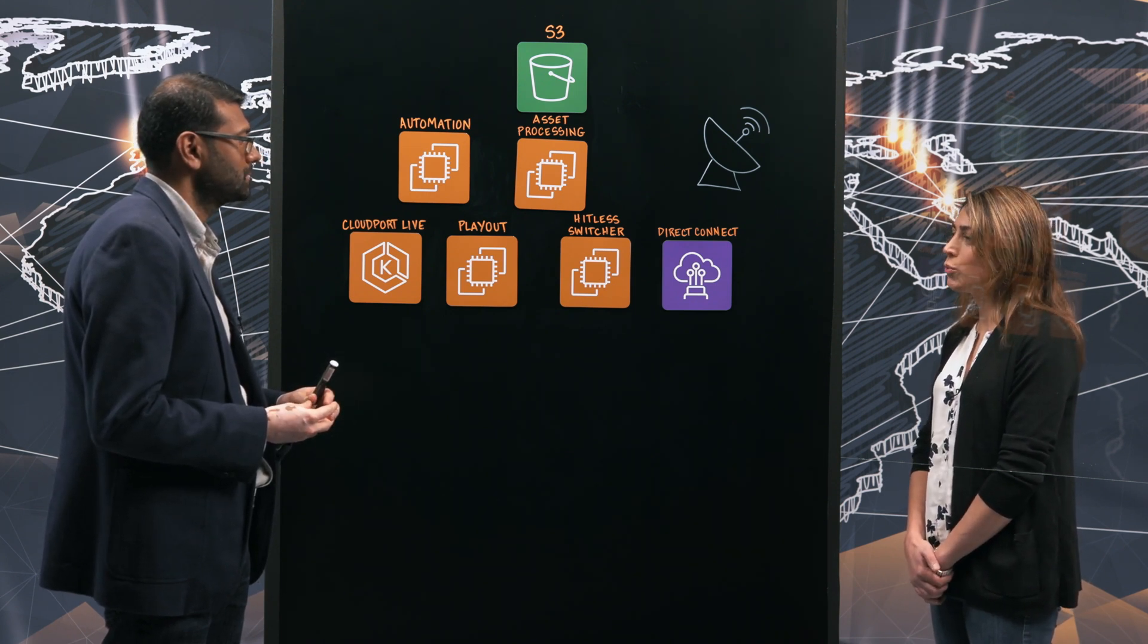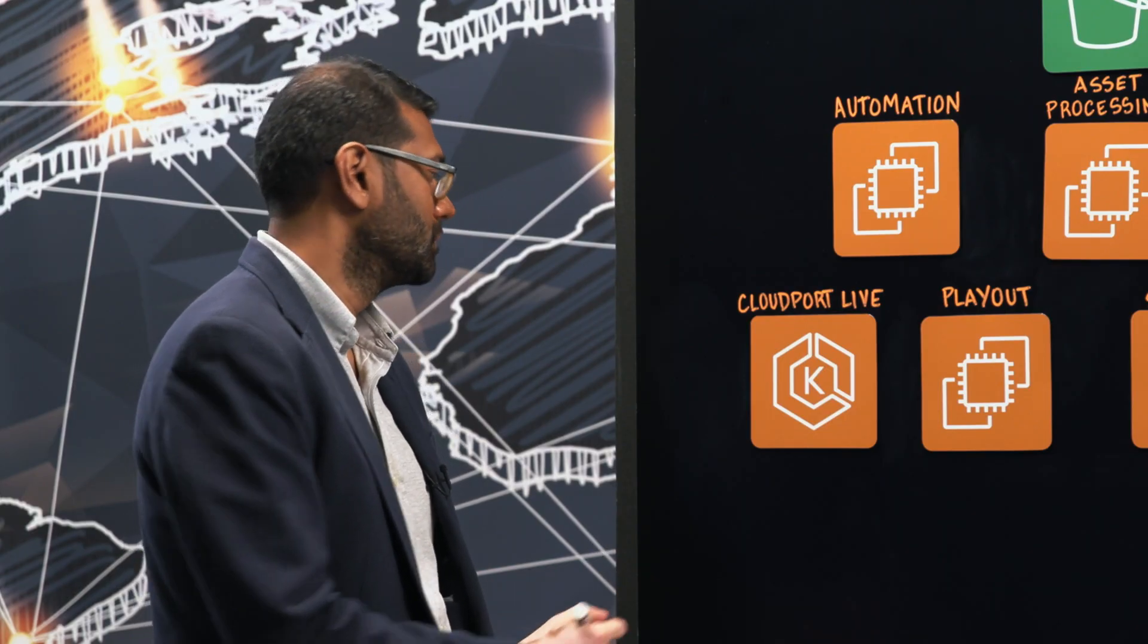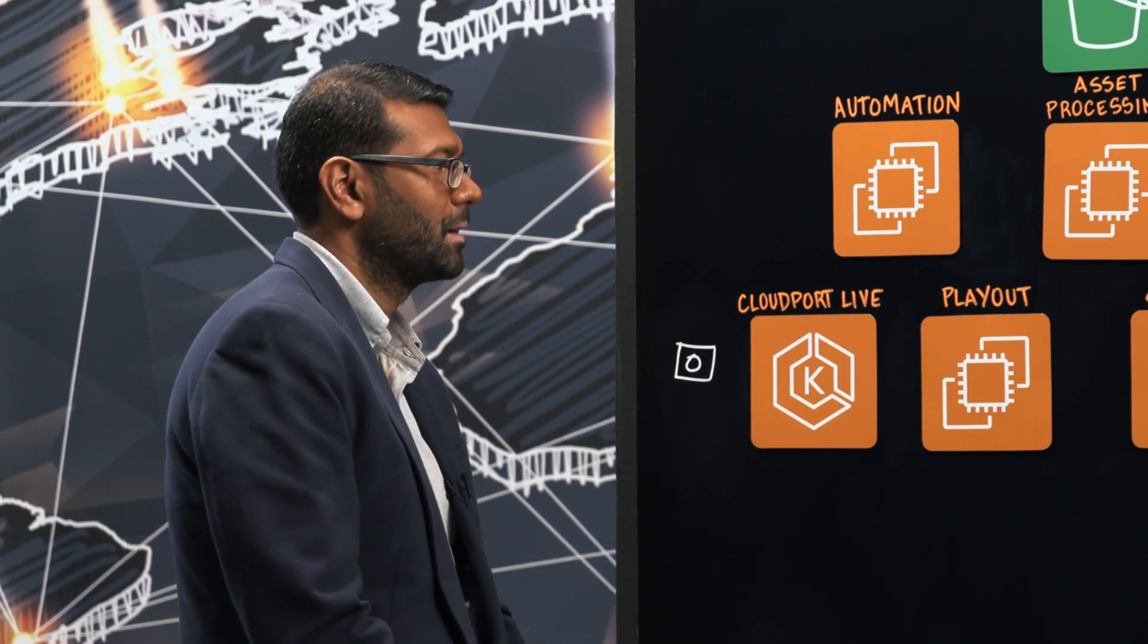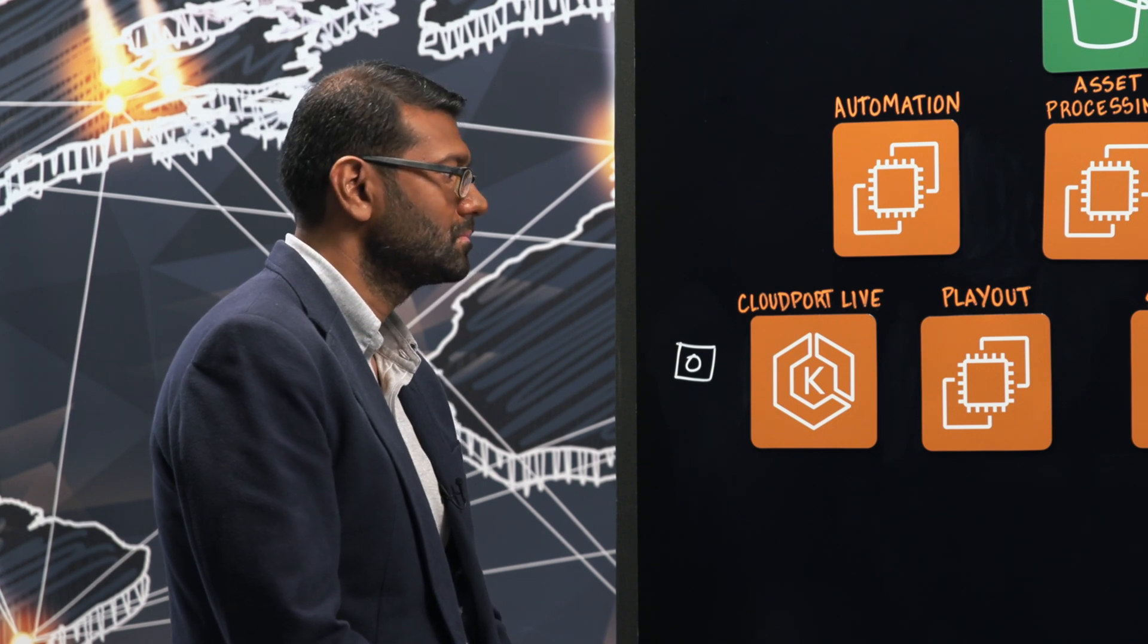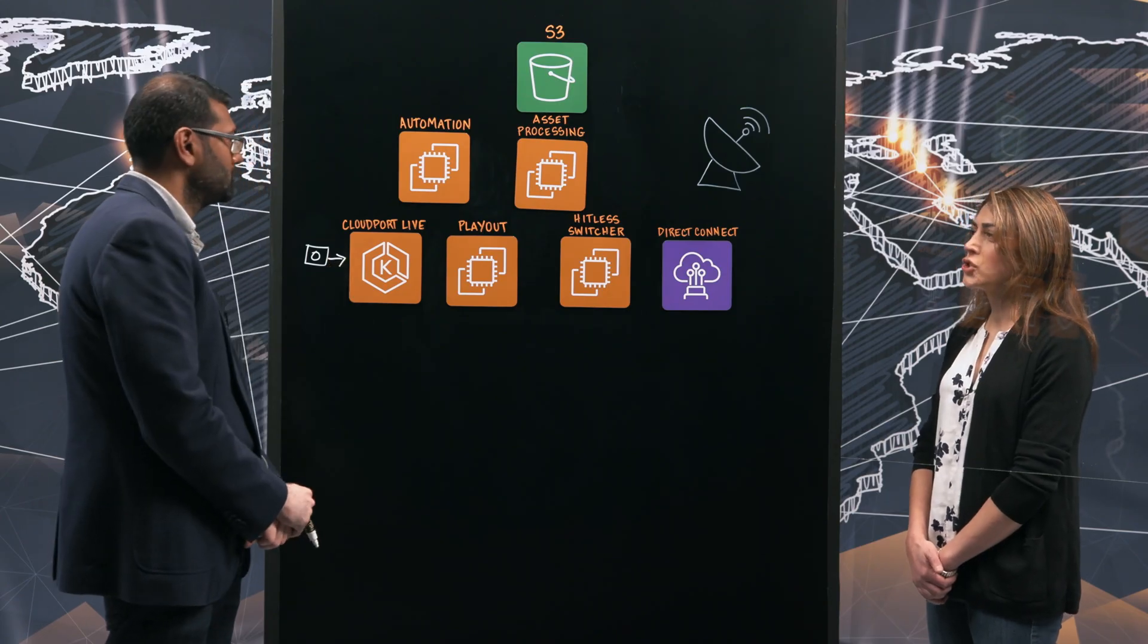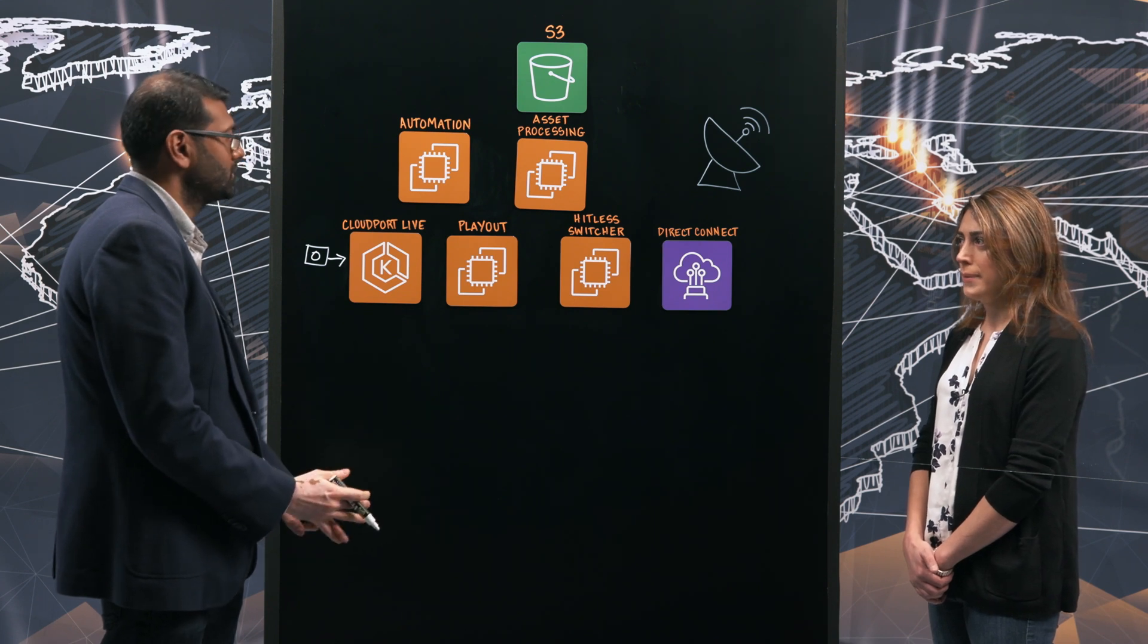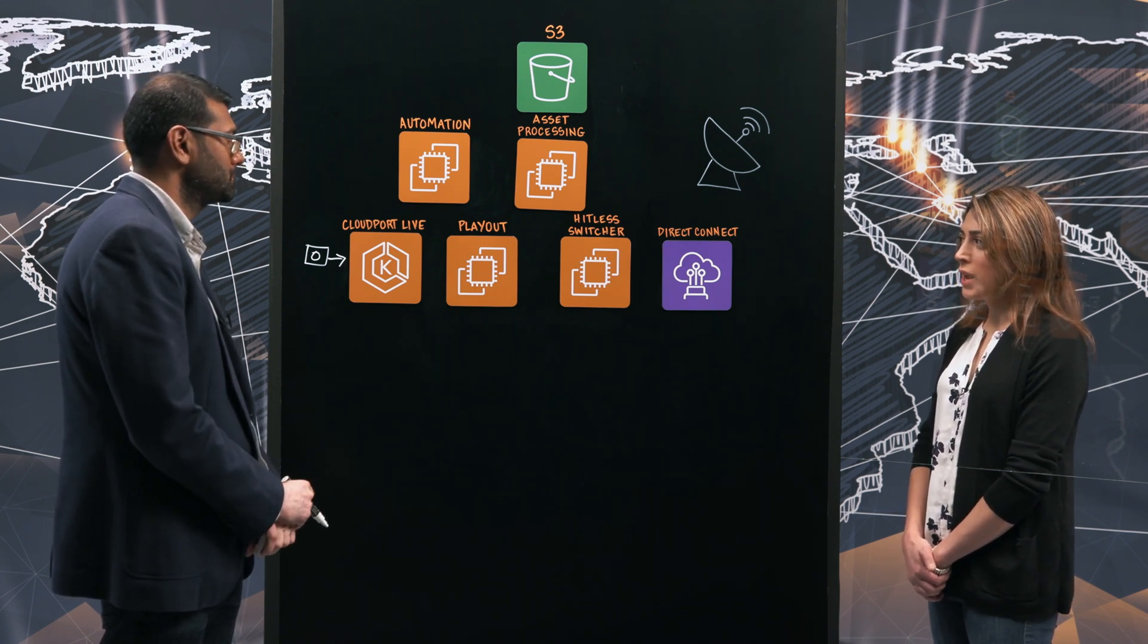So what's the first thing that happens in a sporting event? There's traditionally a venue which resides here, and at that venue there are cameras. Okay, so what do you do with the content generated from that sporting event? That feed goes into CloudPort Live. I see. Is that a streaming event? That's usually a Zixi feed, SRT, or a direct connect feed that comes into Amagi.